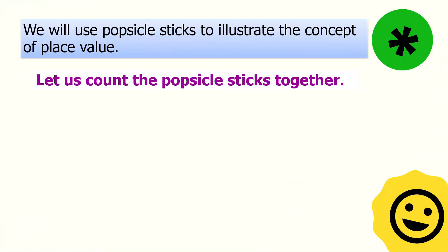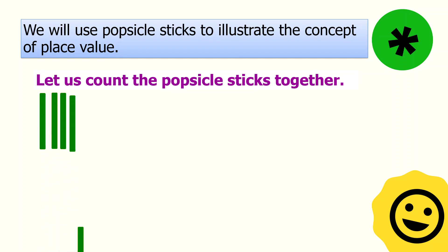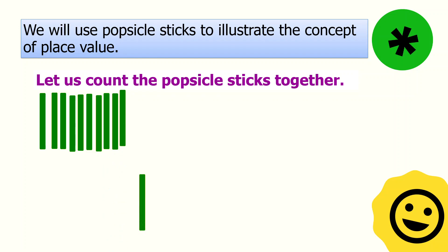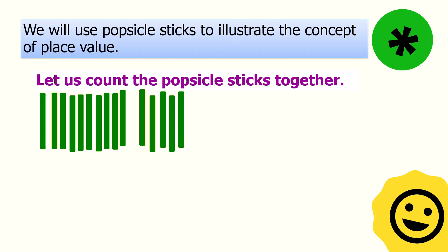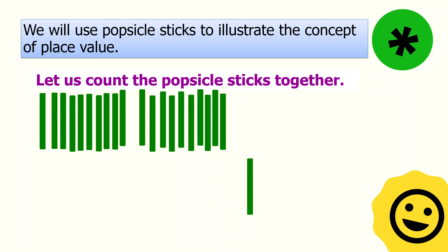We will use popsicle sticks to illustrate the concept of place value. Let us count the popsicle sticks together: 1, 2, 3, 4, 5, 6, 7, 8, 9, 10, 11, 12, 13, 14, 15, 16, 17, 18, 19, 20, 21, 22, 23, 24, 25.